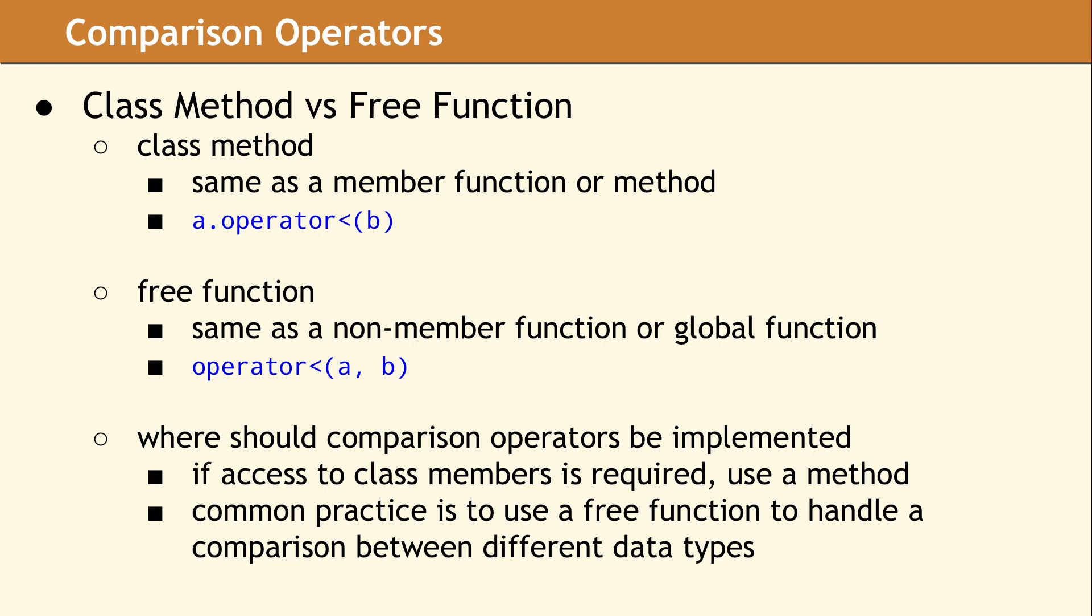Developers disagree about where comparison operators should be implemented. There is no definitive rule. However, there are some use cases which favor one option over the other. A method should be used if the implementation needs access to class data members. This seems reasonable, because otherwise a friend declaration will be needed, and friends can lead to maintainability problems.